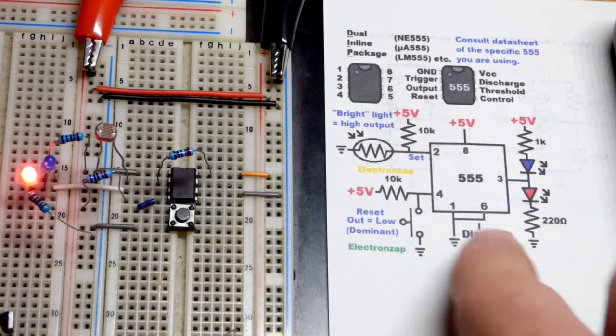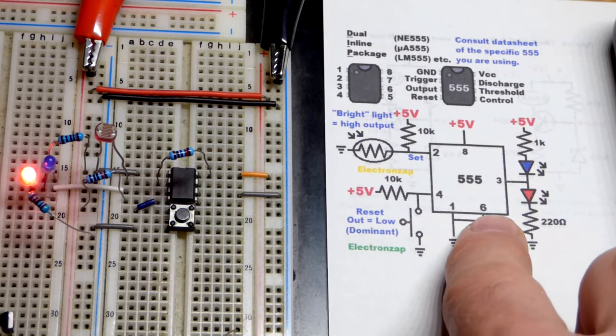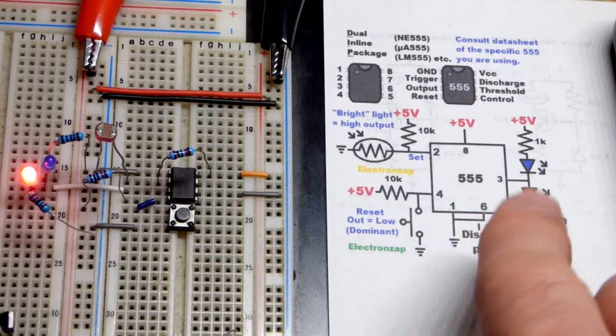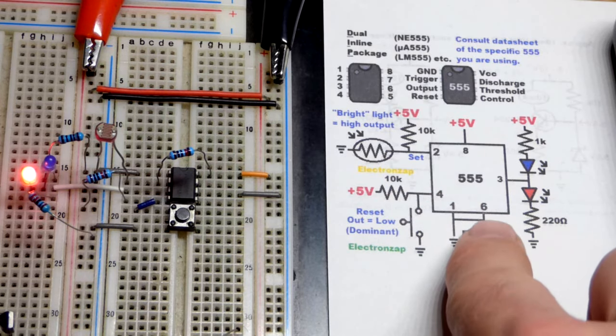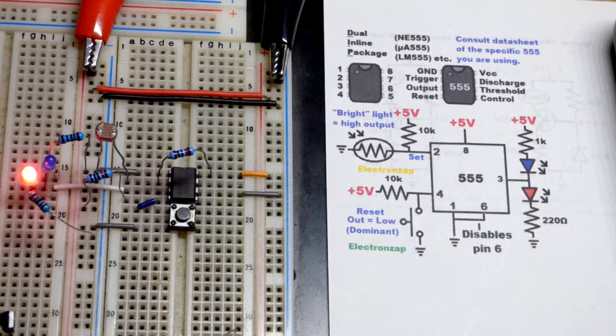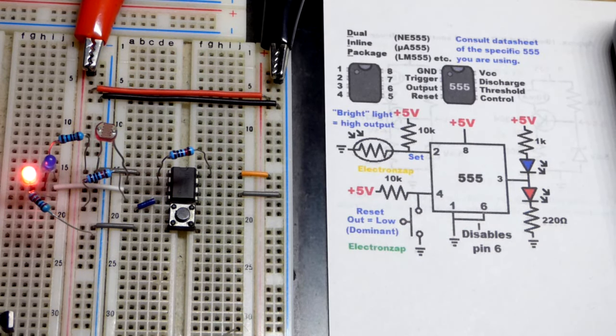There's different ones that you could use. Pin 2, I believe, is dominant over 6 if you're using the NE or the micro A555. But I've read online recently there's other versions of the 555 where pin 6 is dominant over 2. So just be aware of that. But I'm pretty sure 2 is dominant over 6 in this case.